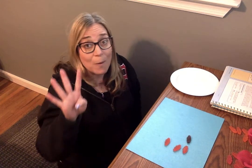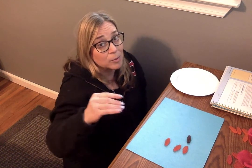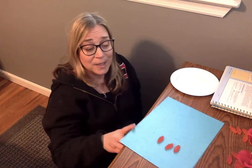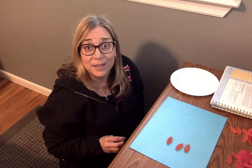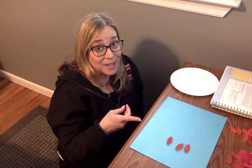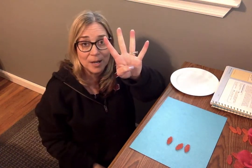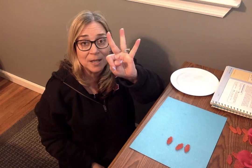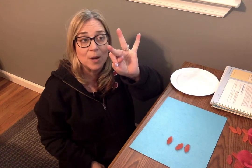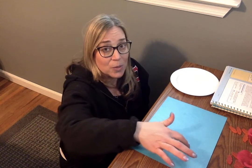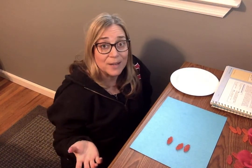So we have four fish. Along comes that hungry shark. He eats one. How many fish are left? Do you see? That's right, there are three. Three fish left. Let's count, because we had four and he ate one. So that gives us one, two, three. One, two, three. Three.